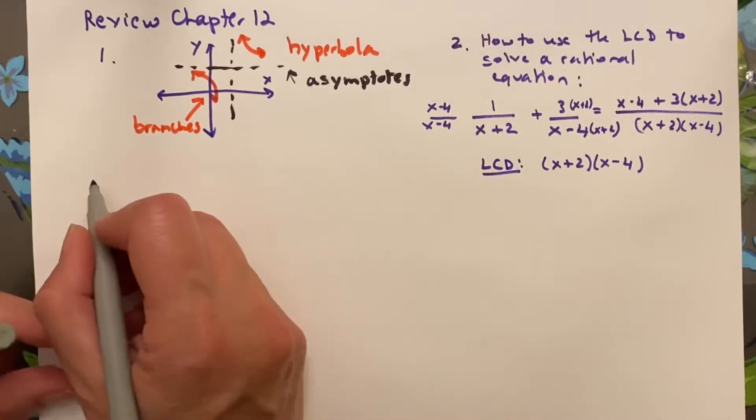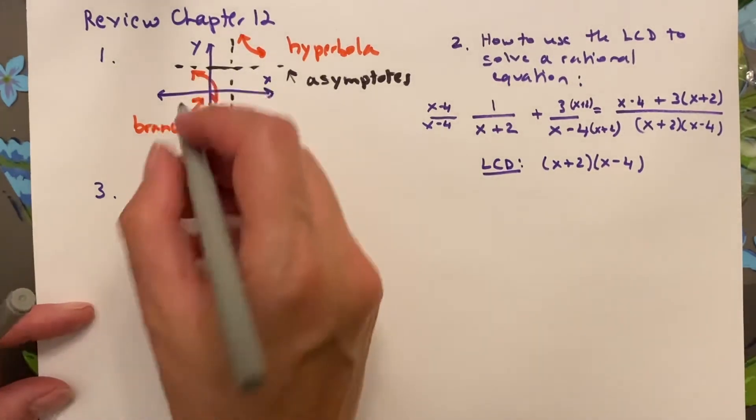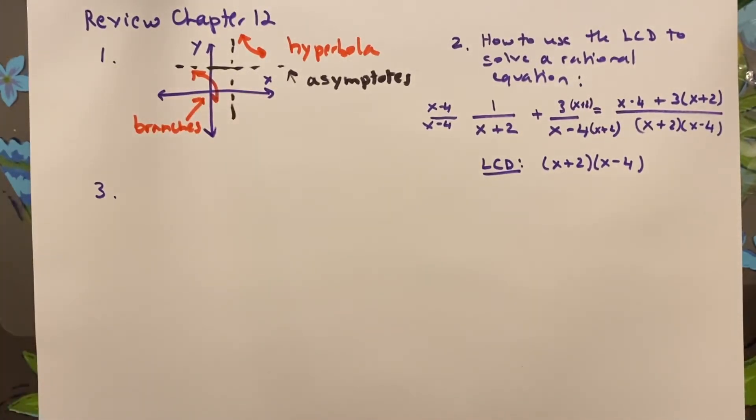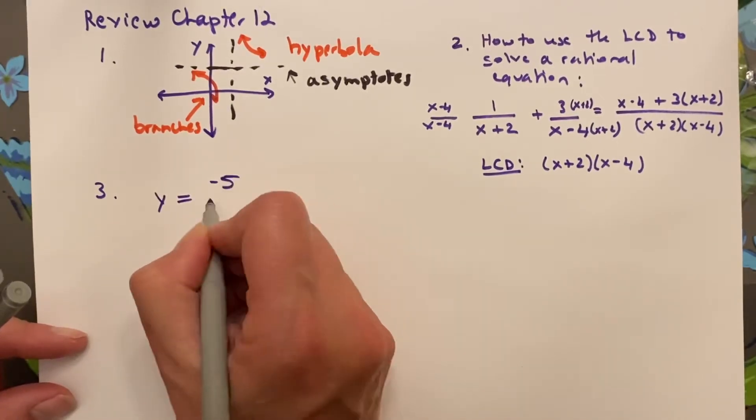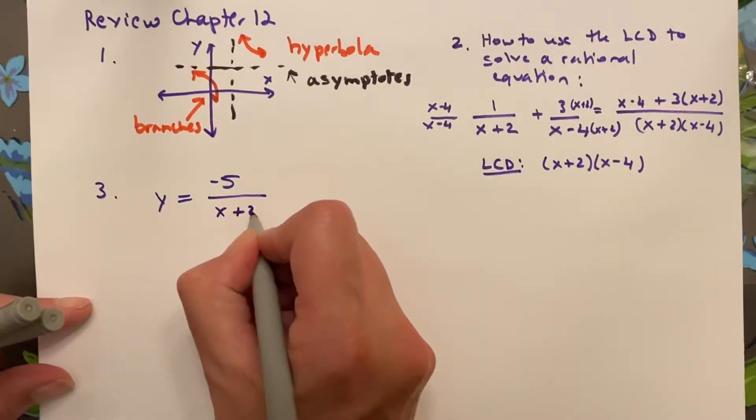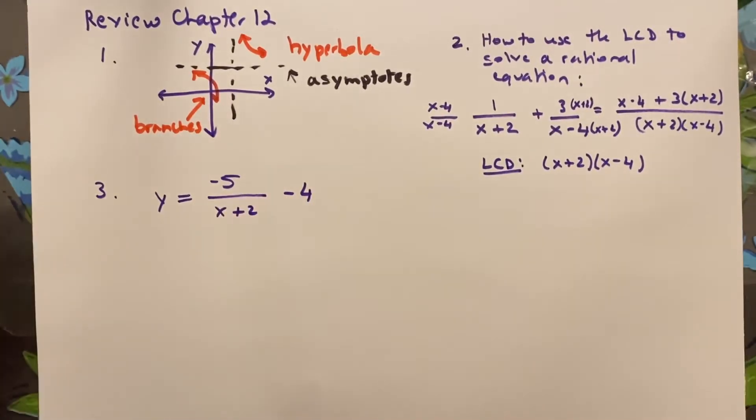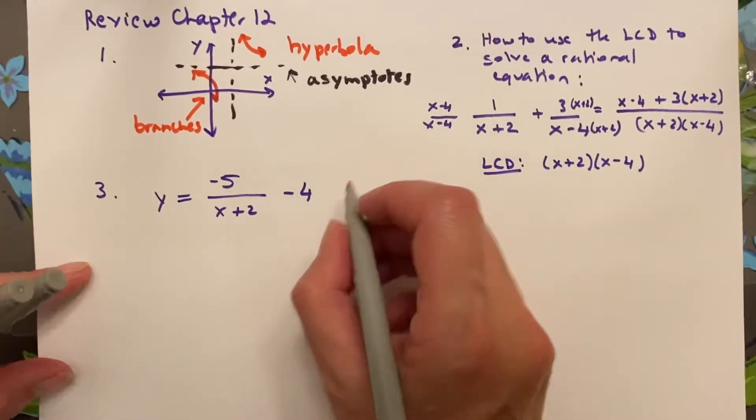Third question: Identify the vertical asymptote and horizontal asymptote of, well, it's fitting that it's right under here, y equals negative 5 over x plus 2 minus 4. So they're asking, identify the vertical and horizontal asymptote. Now, this is incredibly important, and I'm glad we're going through this.